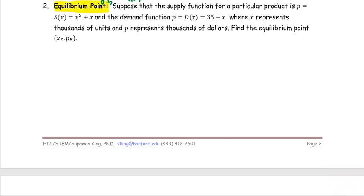The topic of this equilibrium point problem: suppose that the supply function for a particular product is p = S(x) = x² + x, and the demand function is p = D(x) = 35 - x, where x represents thousands of units and p represents thousands of dollars.